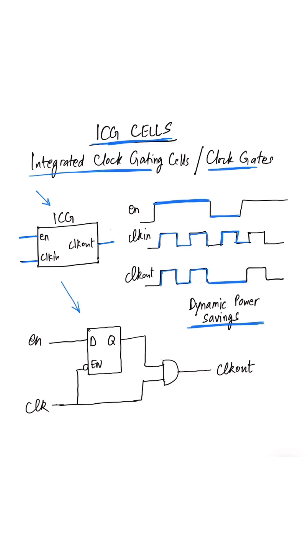If we take a look at what's inside an ICG, it is simply made up of a negative enabled latch and an AND gate.